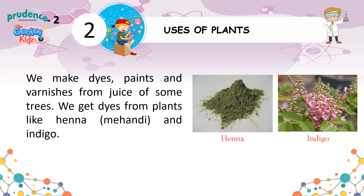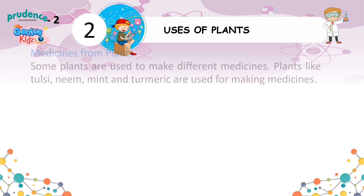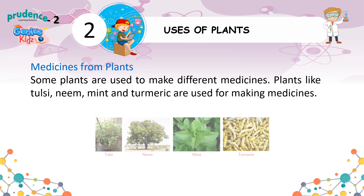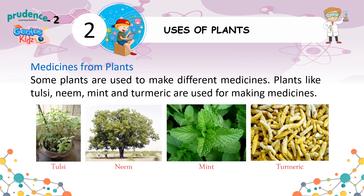We make dyes, paints, and varnishes from the juice of some plants. We get dyes from plants like henna and indigo.